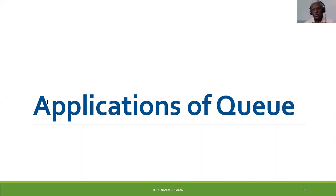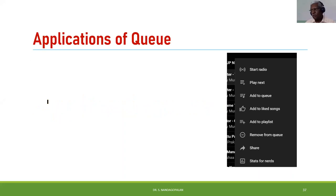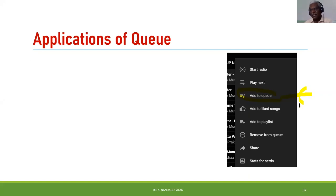Coming to the applications of queues: we have music players like YouTube Music, where you can 'add to queue.' The queue data structure is used here. The first-in-first-out operation is what we require — whatever song you added first will be played first, while other songs wait in the queue.